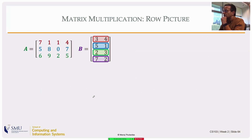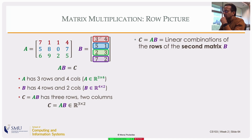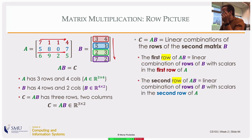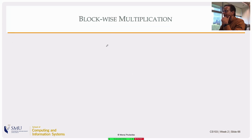If you have more than one row to multiply, use the same idea as the column picture: for the first row of the product, take the linear combination of the rows of the second matrix B with scalars from the first row of A. The second row of the product is a linear combination of the rows of B with scalars from the second row of A. This is the row picture of matrix multiplication.